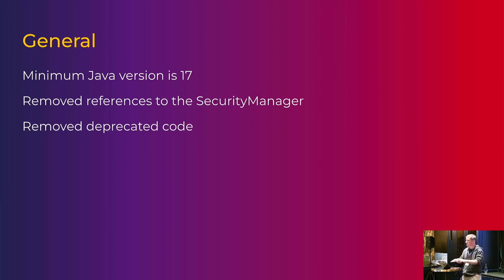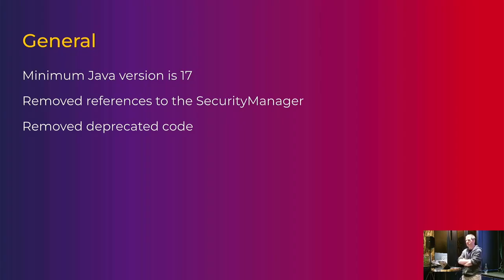There are some general changes that apply across Jakarta EE 11. The first one is the minimum Java version is now Java 17. It was briefly Java 21 and then that got changed — that's a presentation and a story all on itself. Come and find me later if you want all the gory details. But the practical upshot is the minimum version is Java 17.